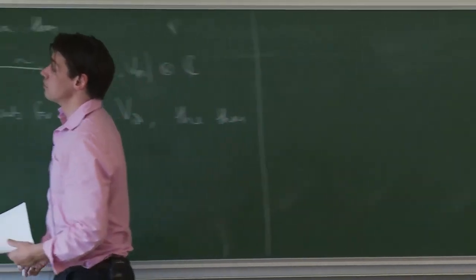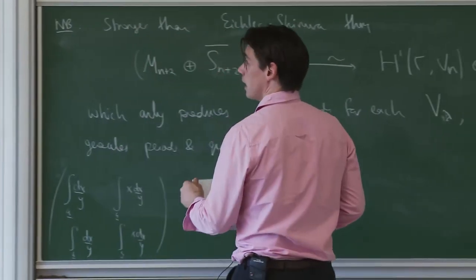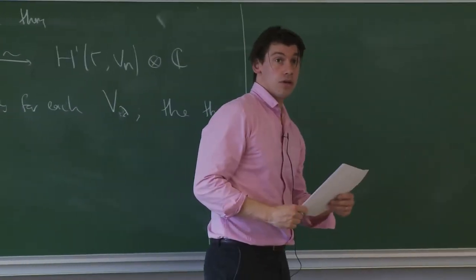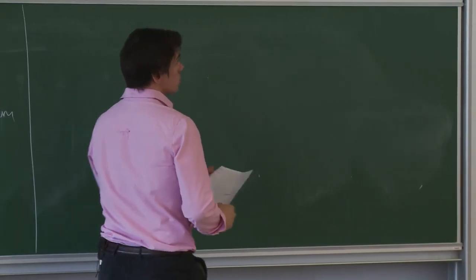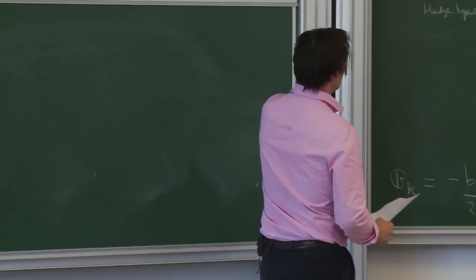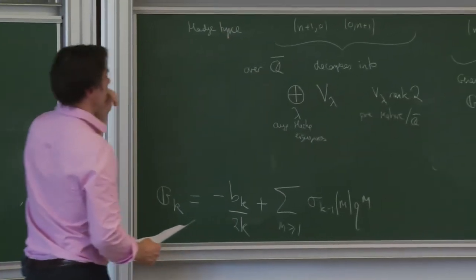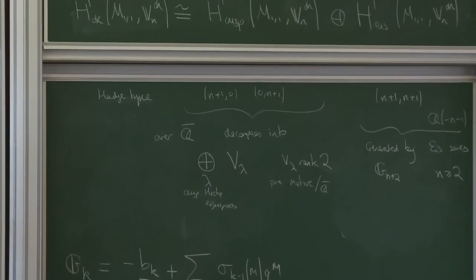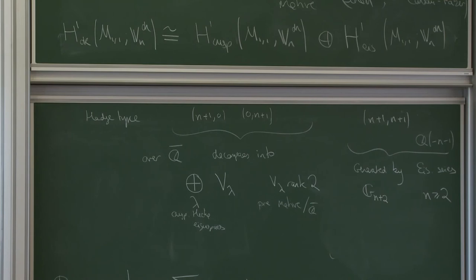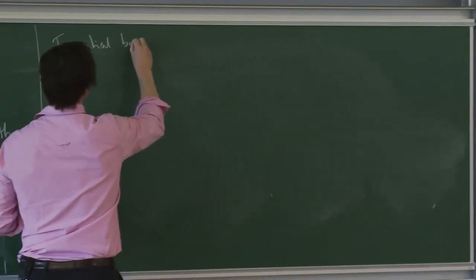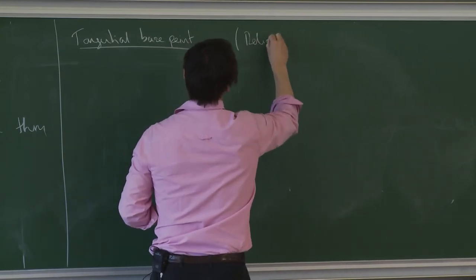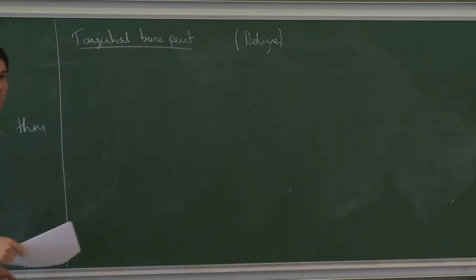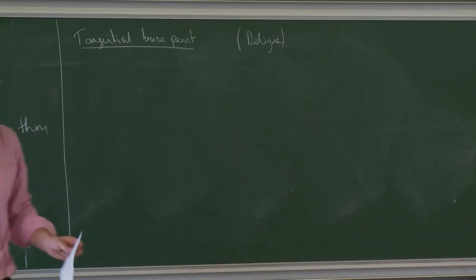Now I want to talk about relative completion. So far everything is pure motives — all abelian, talking about cohomology, not fundamental groups. Now we're going to make it all non-abelian. The first technical point we need is the notion of tangential base point, due to Deligne. If you start from V_lambda, you map to H1; what's the next step and how do you explain the four periods?